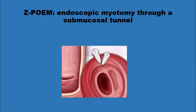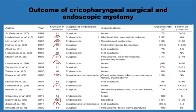Several modifications to the original technique were suggested, including the use of flexible scopes rather than rigid scopes, and attempts to preserve the mucosal cover rather than dividing it with the muscle fibers — working through a submucosal tunnel to reduce the incidence of pharyngeal perforation. A review of outcomes from open or endoscopic surgery across 18 published reports shows success rates of between 60% and 80% in most large reports.